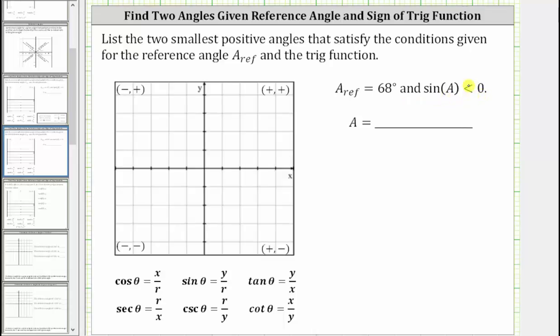On the coordinate plane, sine theta is equal to y divided by r, and because r is always positive, because the sine function value is negative, the y-coordinate must be negative.